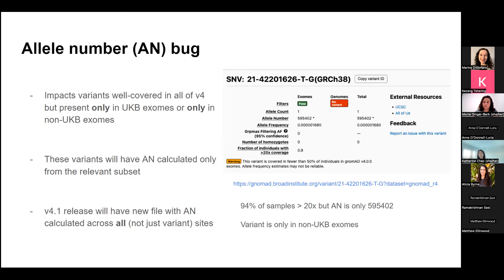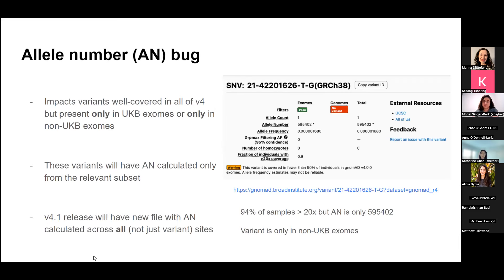One last thing: allele number can be variable for other reasons beyond this bug. I would encourage you to also look at whether the variant is present in both the exomes and the genomes, or if it's just a capture platform difference amongst the different exomes. Just keep in mind that although some frequencies aren't as accurate right now due to this bug, that's going to be fixed pretty soon.